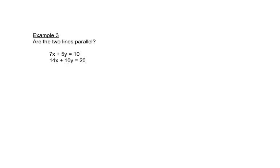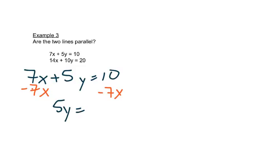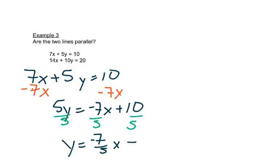Let's look at this one. Same idea here. We're going to put it in the right format. So we'll start by subtracting 7x from both sides. And then I'm going to divide each piece by 5. That gives me a negative 7 fifths x plus 2. So my slope here is negative 7 fifths.